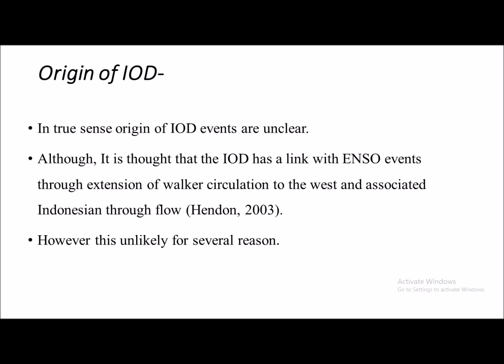The origin of IOD events remains unclear to this date, as there are many theories. Some researchers establish a link between IOD and ENSO events through the extension of Walker circulation to the west and associated Indonesian throughflow into the Indian Ocean. However, this is unlikely for several reasons: ENSO and IOD exhibit significantly different spectral behaviour; the IOD has peak power in the 1960s and 1990s, while ENSO peaked in the 1970s and 1980s. During 1997, there was a strong El Niño and IOD event simultaneously, and the IOD event diminished the impact of El Niño on the Indian subcontinent.